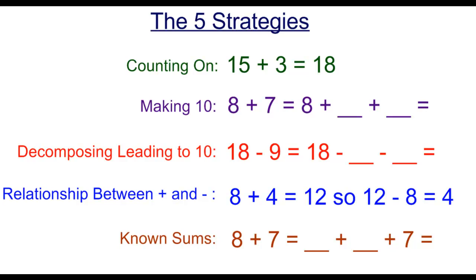The next of the five strategies is making 10, where students try to get to the number 10 because that's an easy number to add and subtract with. So we can break up this 7 in this case to be 2 and 5. 8 plus 2 gives us 10, adding 5 is easy to get to 15.